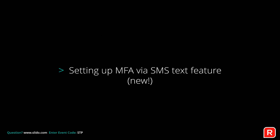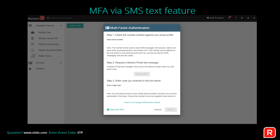To set up MFA via SMS text: you'll be prompted to enter your mobile number, then send the code — it will send you a six-digit code to enter. Once set up, each time you log into Reckon GovConnect going forward, it will just send you that six-digit code.